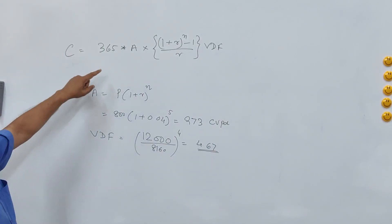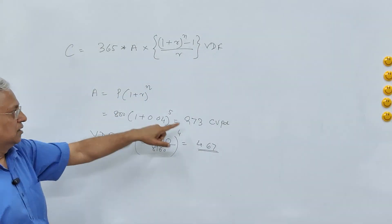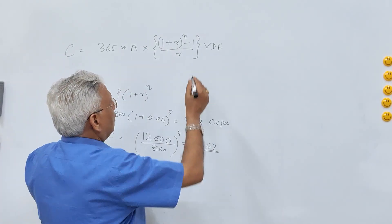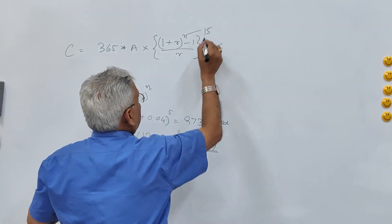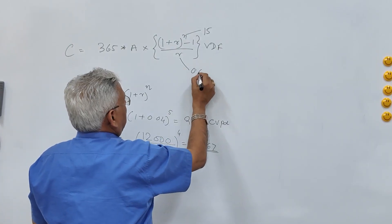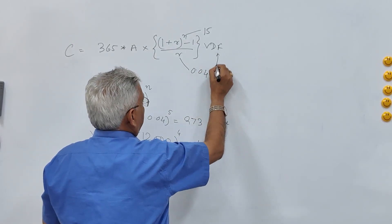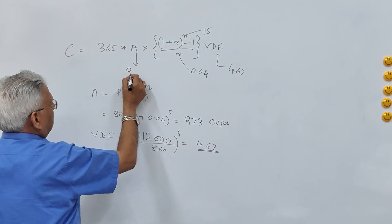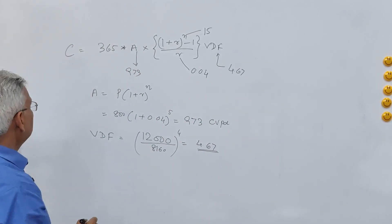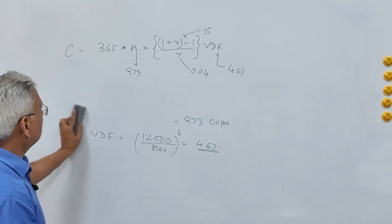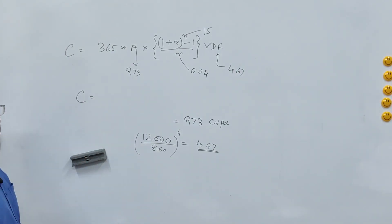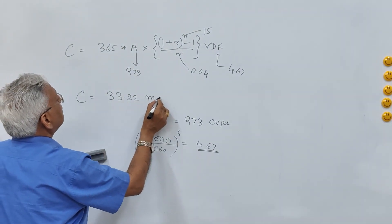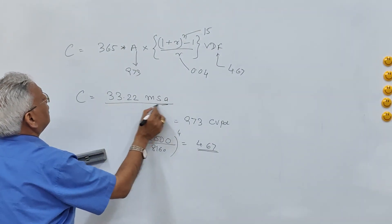Substituting the values: A = 973, R = 0.04, N = 15 years, VDF = 4.67. Putting all these values into the equation gives total MSA equal to 33.22 million standard axles. This is the cumulative standard axle value for pavement design.